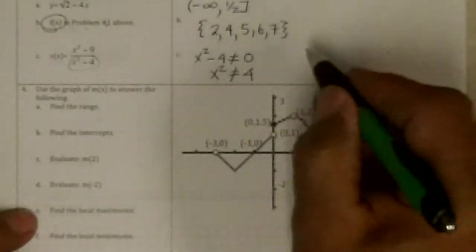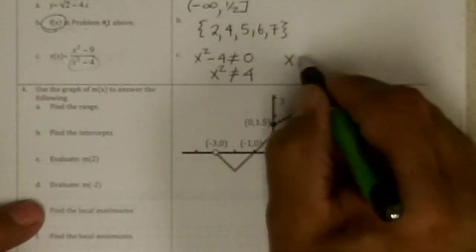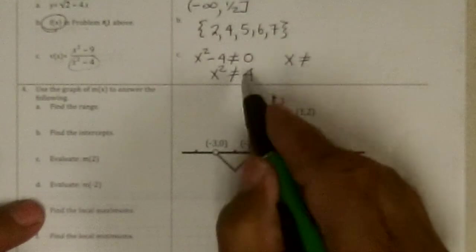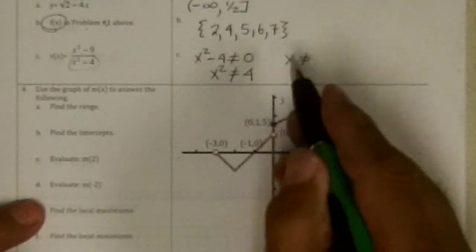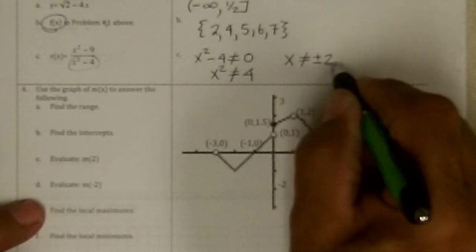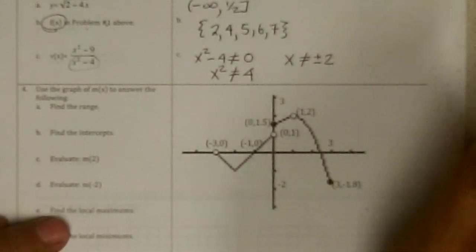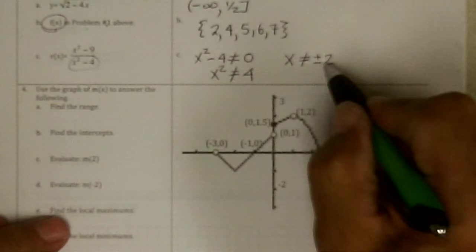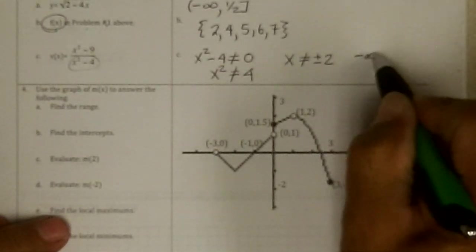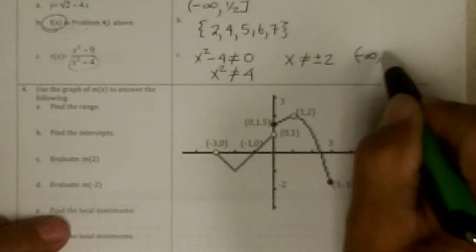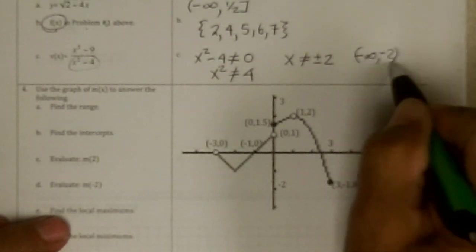Take the square root of both sides, and x cannot equal the square root of 4. The square roots of 4 are plus or minus 2. So the domain in interval notation, we can have anything from negative infinity up to negative 2, but not including it.